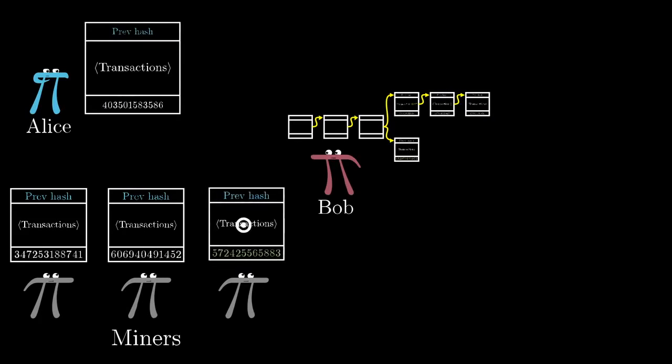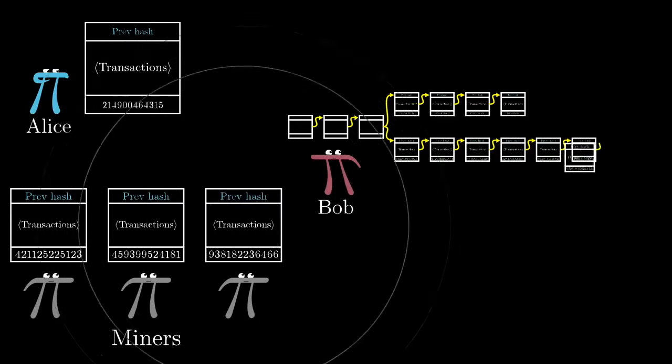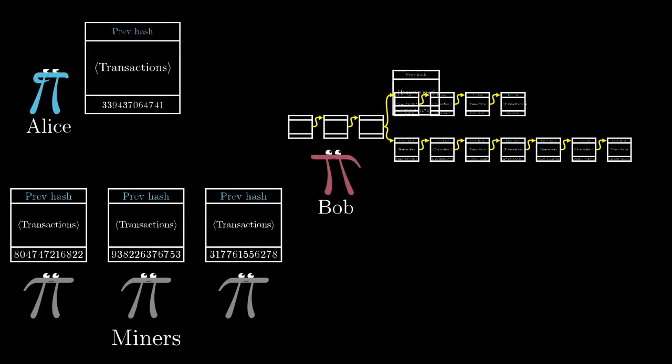Remember, as per the protocol, Bob always trusts the longest chain that he knows about. Alice might be able to keep this up for a few blocks if just by chance she happens to find blocks more quickly than the rest of the miners on the network all combined. But unless she has close to 50% of the computing resources among all of the miners, the probability becomes overwhelming that the blockchain that all of the other miners are working on grows faster than the single, fraudulent blockchain that Alice is feeding to Bob. So, after enough time, Bob's just going to reject what he's hearing from Alice in favor of the longer chain that everyone else is working on.